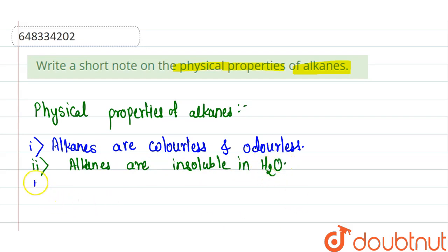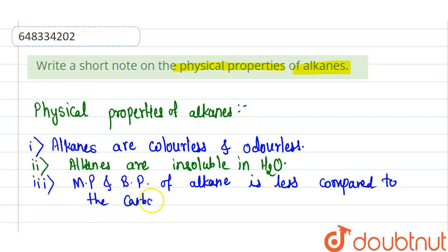Third point is the melting point and boiling point of alkane is less compared to the carbon having same molecular weight.